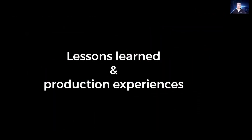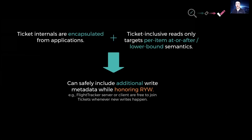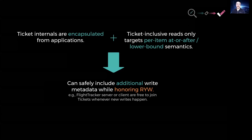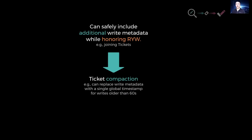We learned quite a few fascinating, even surprising lessons from designing, implementing, and running FlightTracker in production. One interesting lesson is that ticket-inclusive reads provide per-item, at-or-after, or lower-bound semantics — combined with the encapsulation of tickets — giving us great flexibility in system design. Whenever we do a ticket-inclusive read, we can safely include additional write metadata; the read will still yield an acceptable result because we're simply raising this lower bound. Since applications can't inspect what's inside a ticket, they can't tell the difference from just the read result. This means FlightTracker's server and client libraries can freely join tickets whenever new writes happen. We leverage this to compact tickets — for example, we assume async replication finishes within 60 seconds, so FlightTracker can replace write metadata older than 60 seconds with a single global timestamp, which semantically expresses all prior writes from 60 seconds ago.